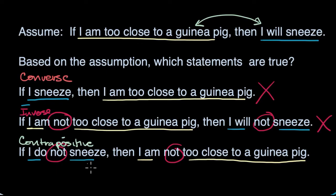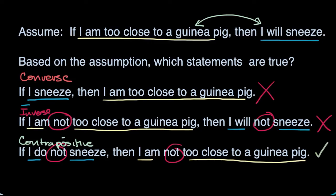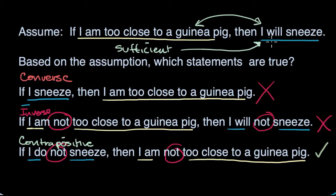But is this true? We're assuming that if you're too close to a guinea pig, then you will sneeze every time. So if you're not sneezing, then there's no way that you're too close to a guinea pig. You also might not be close to anything else you're allergic to, but you're definitely not too close to a guinea pig — because if you were, then you would sneeze. So this one is definitely true.